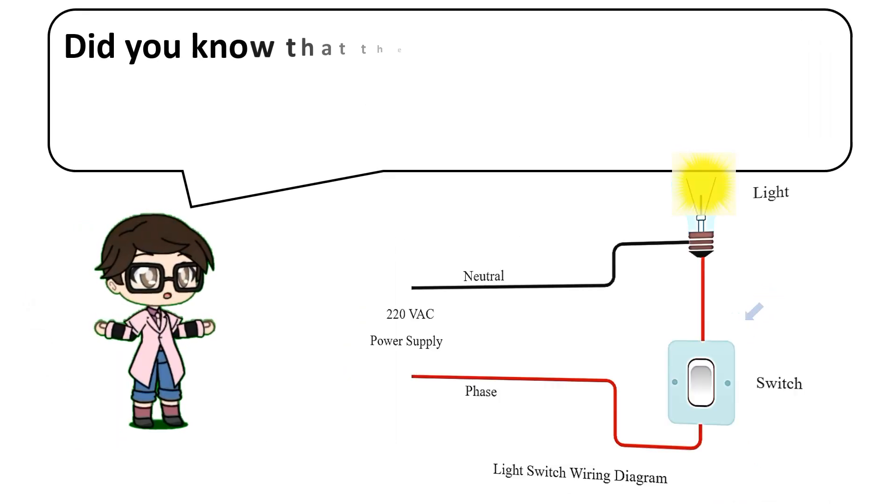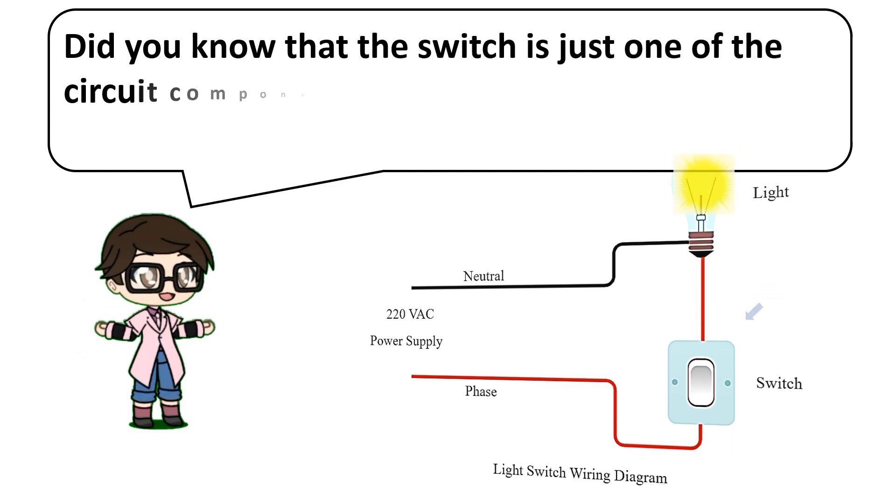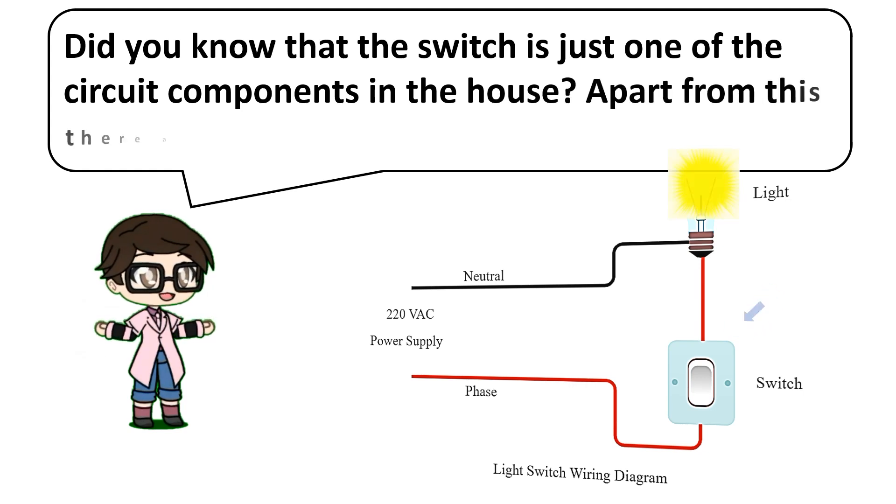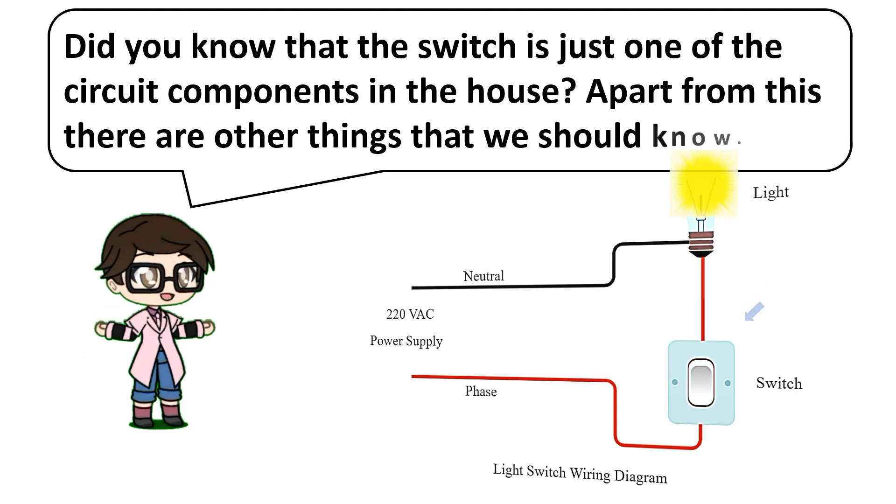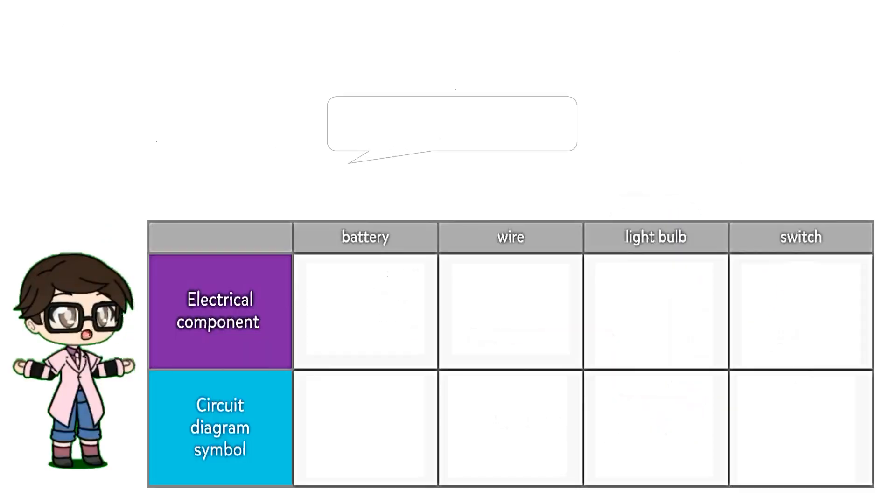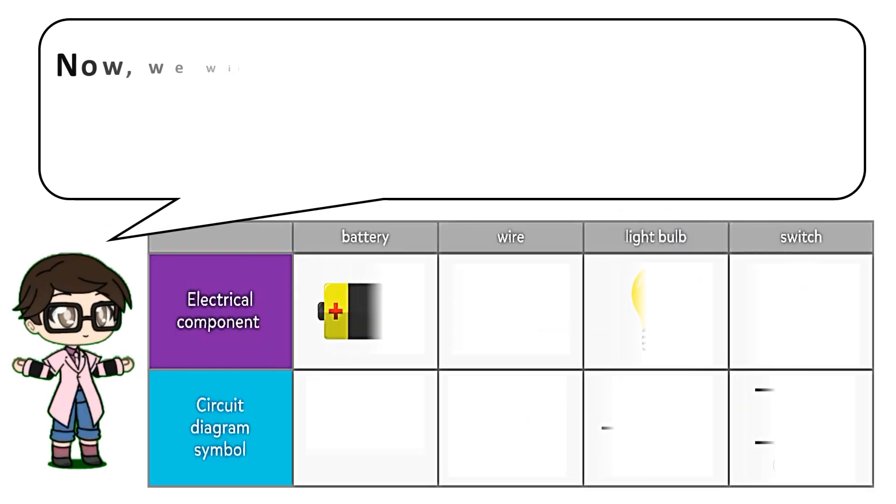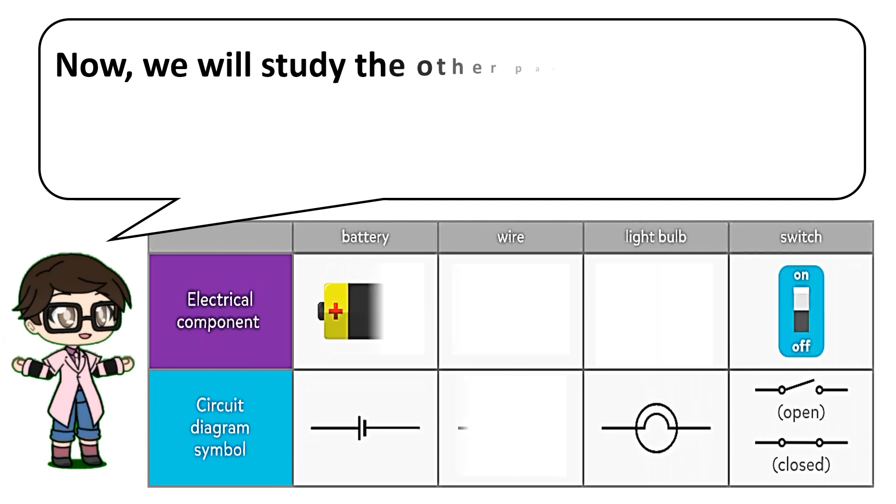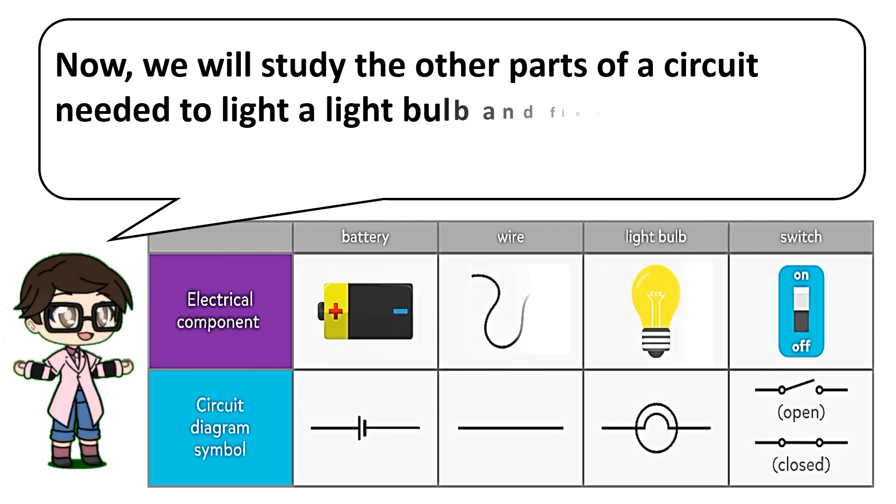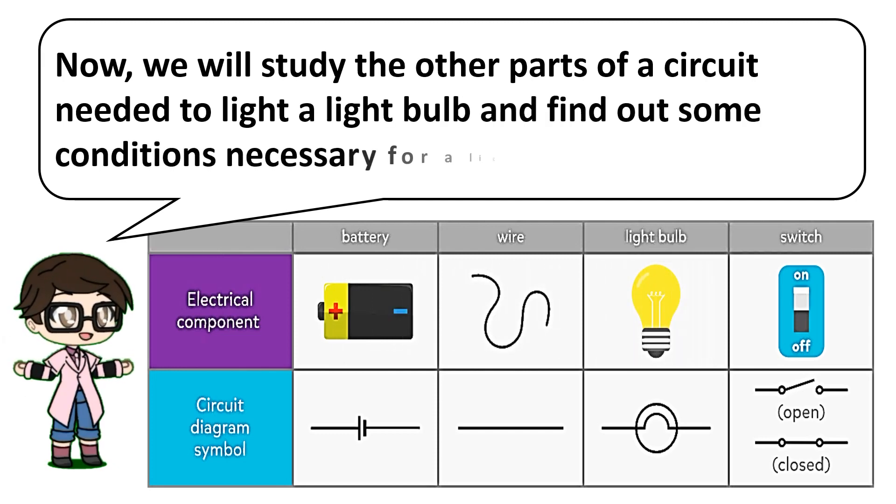Did you know that the switch is just one of the circuit components in the house? Apart from this, there are other things that we should know. Now we will study the other parts of a circuit needed to light a light bulb and find out some conditions necessary for a light bulb to glow.